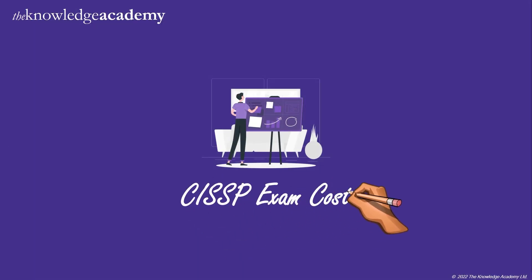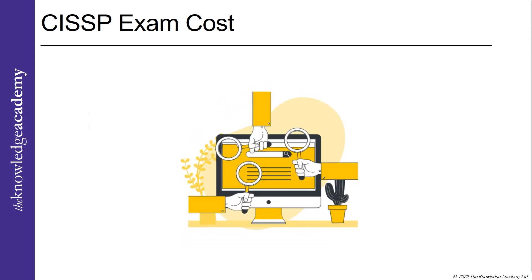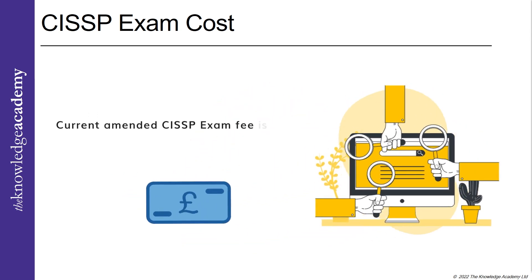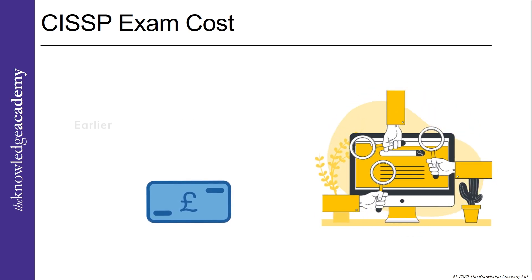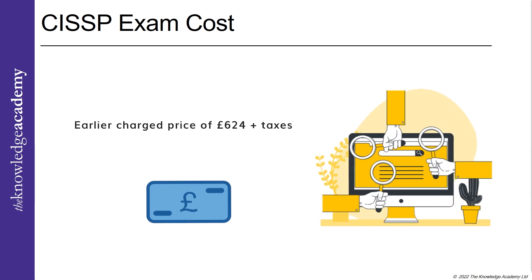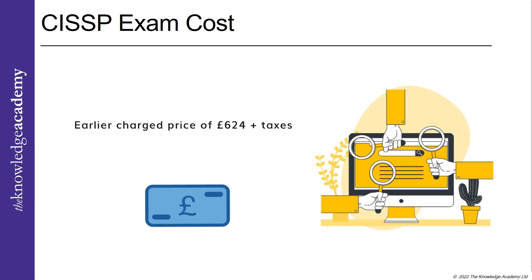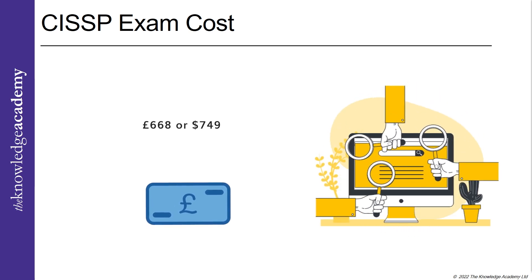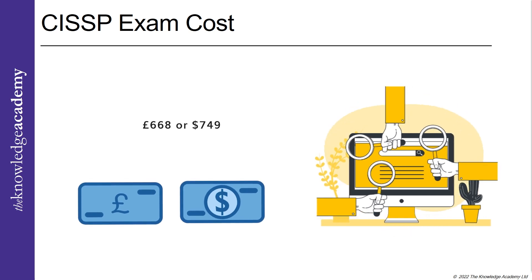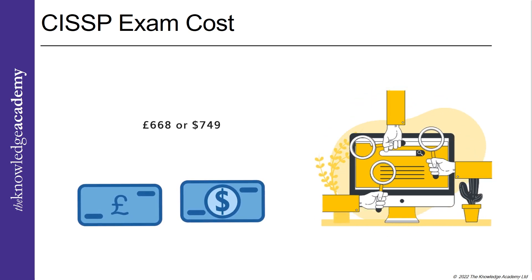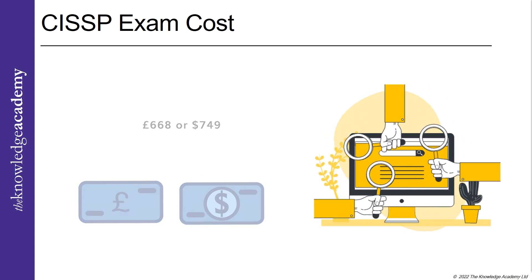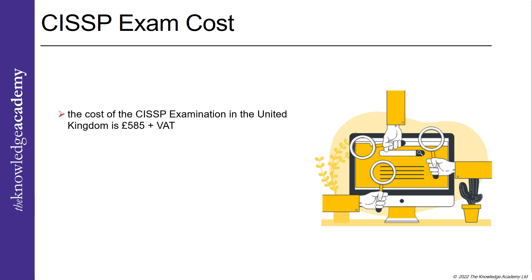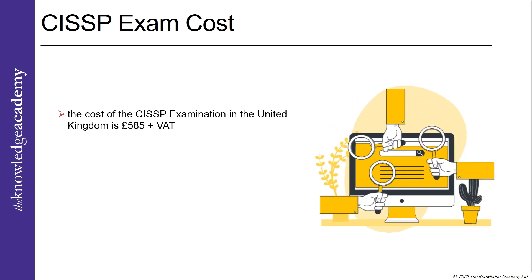Depending on the country you apply from, the current CISSP exam fee is 668 pounds, up from the earlier price of 624 pounds plus taxes. As of November 2022, the CISSP exam price is 668 or 749 US dollars for America, Asia Pacific, the Middle East, and Africa. In the United Kingdom as of November 2022, the cost is approximately 585 pounds plus VAT.